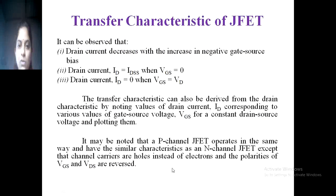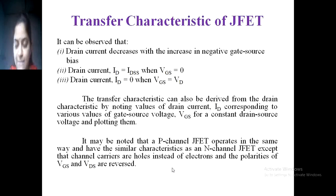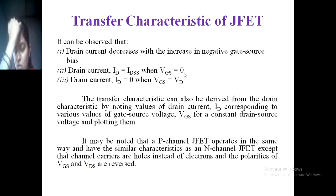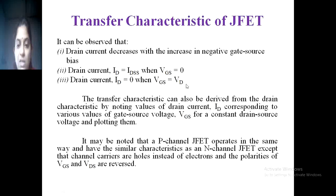The graph plots gate-source voltage VGS against drain current ID as shown in Figure 3-1. Observations include: drain current decreases with increasing negative gate-source bias; drain current ID equals IDSS when VGS equals zero, meaning maximum current flows through the JFET; and drain current ID equals zero when VGS equals the cutoff voltage. For the N-channel JFET, when VGS becomes more negative, there is no channel present to allow current flow, so ID is zero.